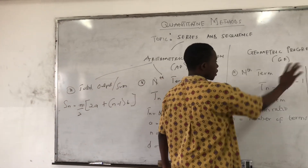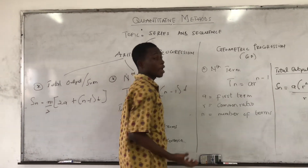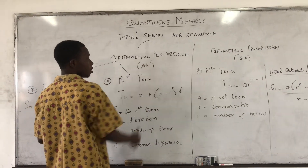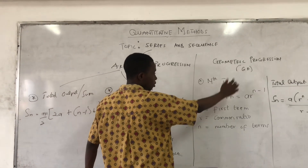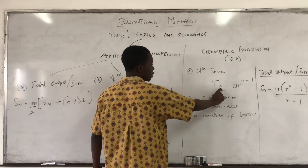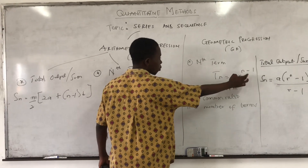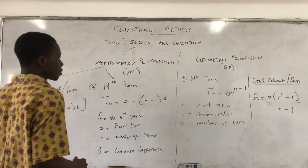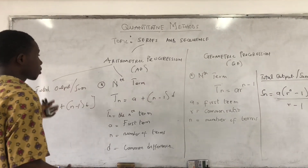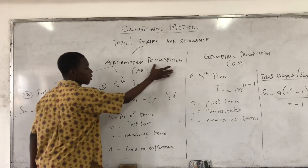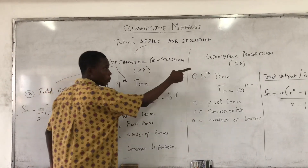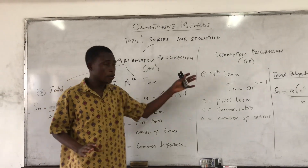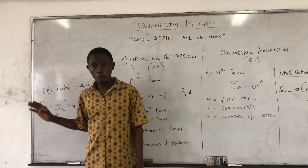With geometric progression, the key difference from arithmetic progression is the common ratio. Arithmetic progression uses a common difference, while geometric progression uses a common ratio.